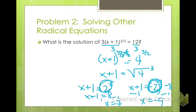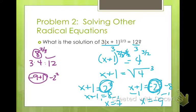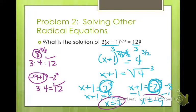We're going to try both of these back in our equation. For x equals 7: 7 plus 1 is 8 to the 2/3 power; the cubed root of 8 is 2; 2 squared is 4; so 3 times 4 equals 12 — that one checks. For x equals negative 9: negative 9 plus 1 is negative 8; the cubed root of negative 8 is negative 2; negative 2 squared is positive 4; and 3 times 4 is 12 — that one also checks. So both of our answers are solutions.